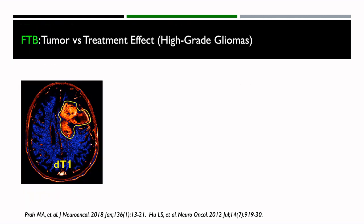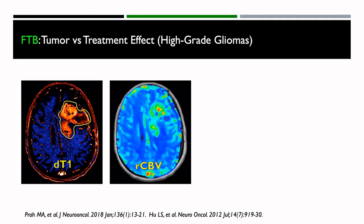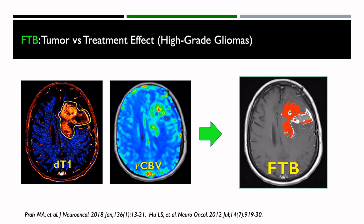Using this information, we can take our delta T1 maps plus our RCBV maps. Within the delta T1 region, we look at the threshold of RCBV and create what we call fractional tumor burden maps. This tells us that within the area of enhancement, the areas of red are tumor and the areas of white are treatment effect.